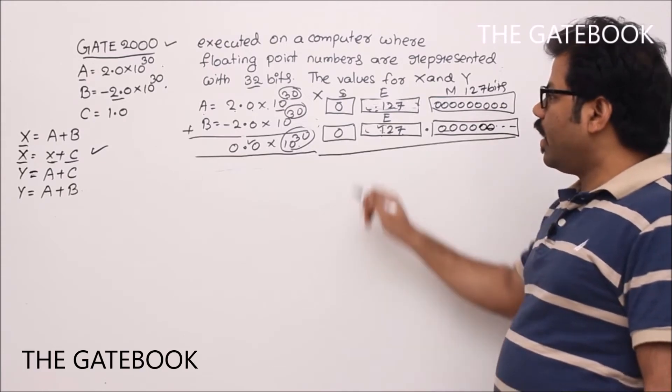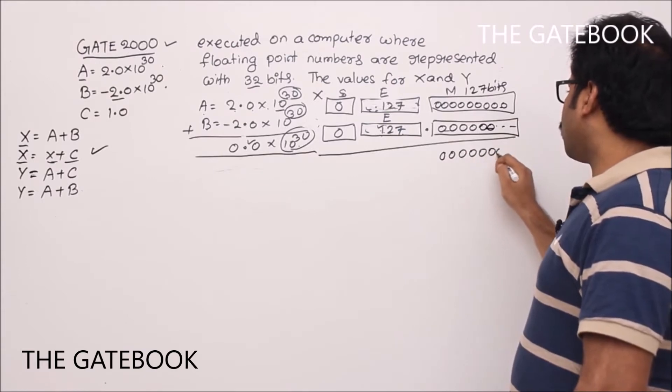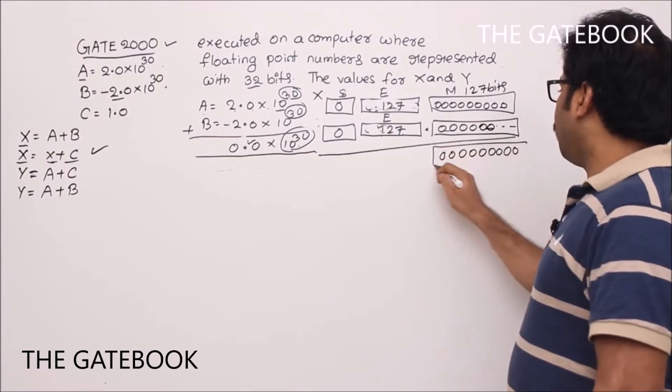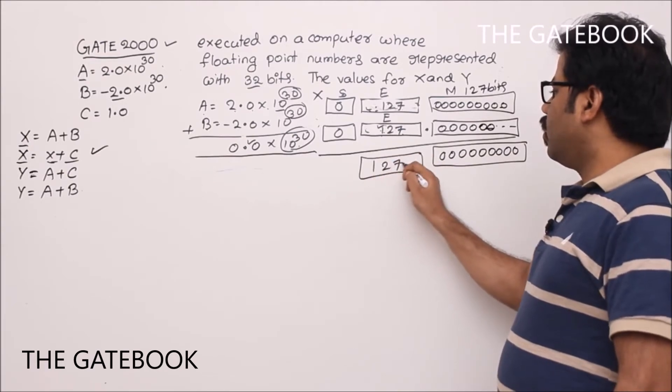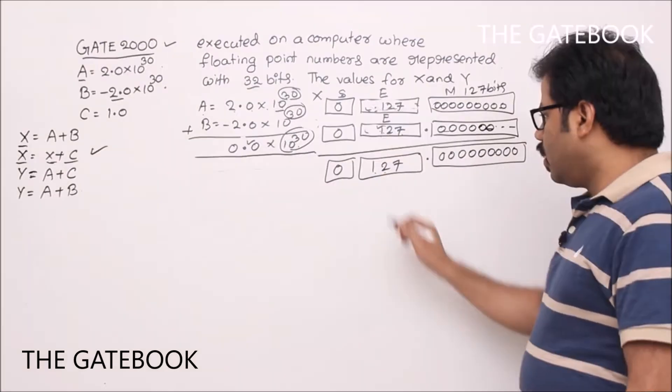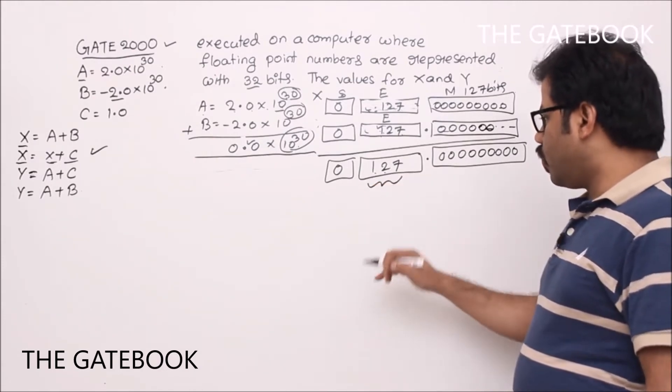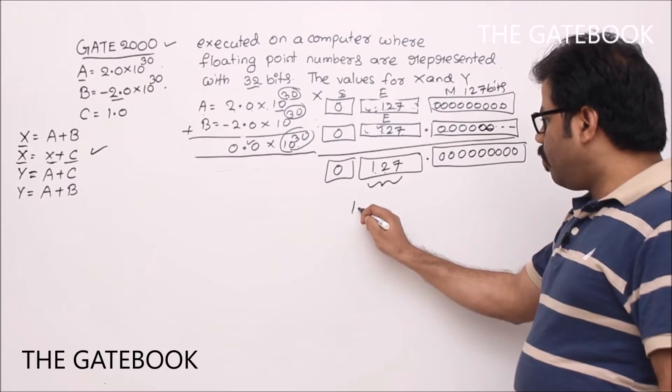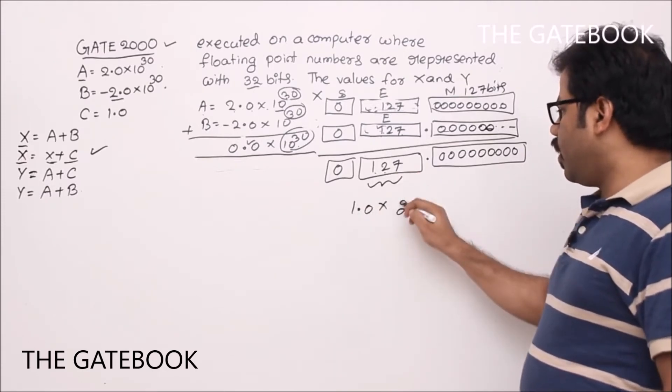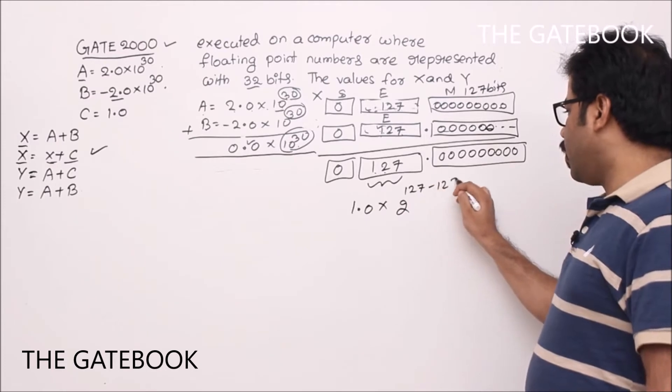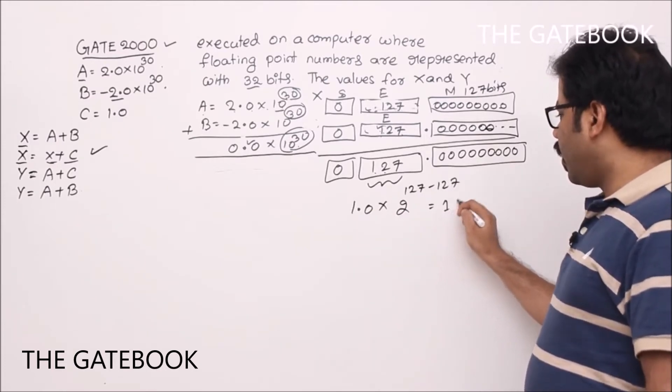Then, what is the answer? X equal to X plus C. Now, you add them. When you add them, you get all zeros, correct? Now, here you get what? 127, right? Zero. Recall. It is zero, right? Because, it is in XS127 format. If you see this one, then answer is 1.0 into 2 to the power of exponent 127 minus 127, which is nothing but 2 power 0, 1. So, 1 into 1, 1. So, finally you got answer 1.